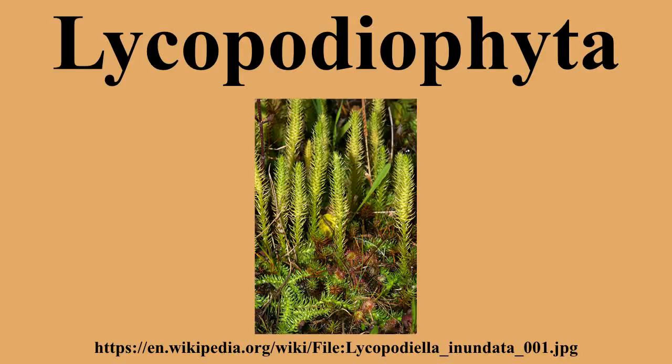The division Lycopodeophyta is a tracheophyte subdivision of the kingdom Plantae. It is one of the oldest lineages of extant vascular plants and contains extinct plants like Baraguanophthea that have been dated from the Silurian. These species reproduce by shedding spores and have macroscopic alternation of generations, although some are homosporous while others are heterosporous. Most members of Lycopodeophyta bear a protostele, and the sporophyte generation is dominant.